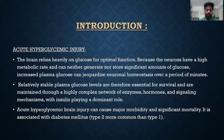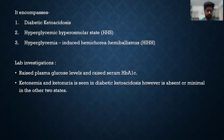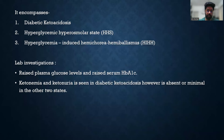Acute hyperglycemic brain injury can cause major morbidity and significant mortality. It is associated with DM type 2, being more common than type 1. It encompasses diabetic ketoacidosis, hyperglycemic hyperosmolar state, and hyperglycemia-induced hemichorea hemiballismus. Lab investigations show raised plasma glucose levels and raised serum HbA1c. Ketonemia and ketonuria are seen in diabetic ketoacidosis; however, they are absent or minimal in the other two states.